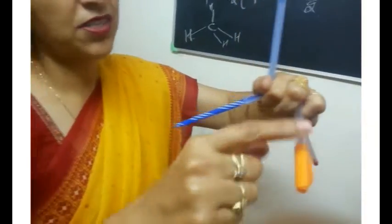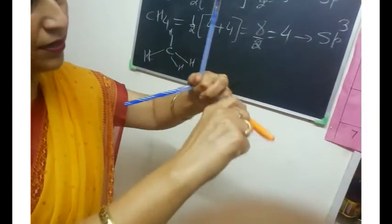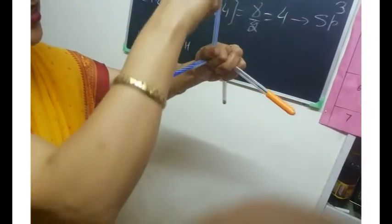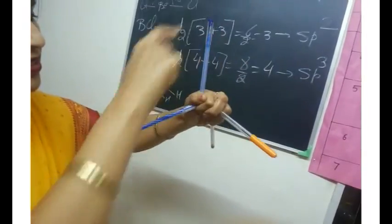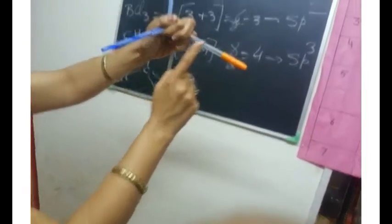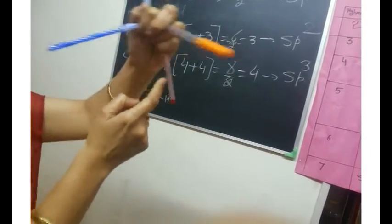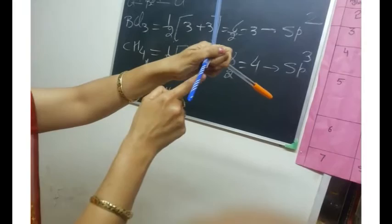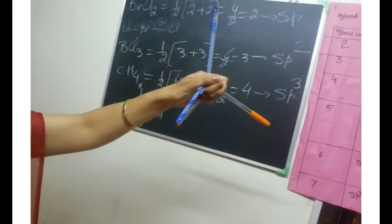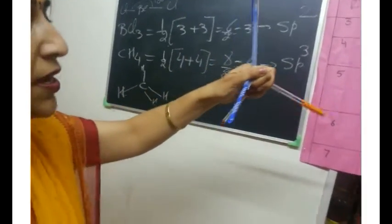If we count the number of 109°28' bond angles in methane: there is one angle here (first), a second angle, a third angle — that's three from this face. Then a fourth angle between these, a fifth angle, and a sixth angle. So there are 6 bond angles all lying at 109°28'. This is SP³ hybridization with tetrahedral geometry.